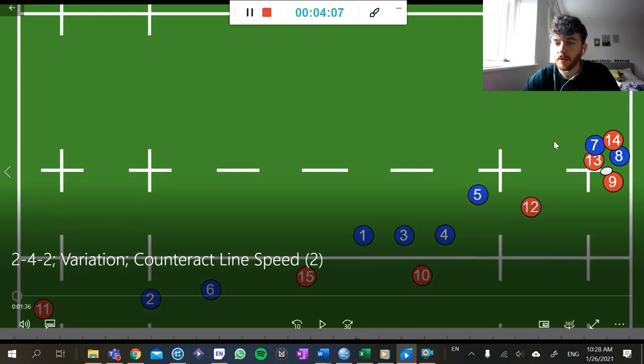So we have our 5 running the dummy, 12 in behind, he's our playmaker on that side. And then we have our pod and we're here again.